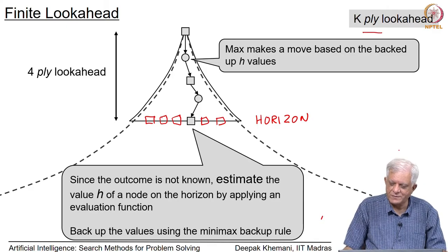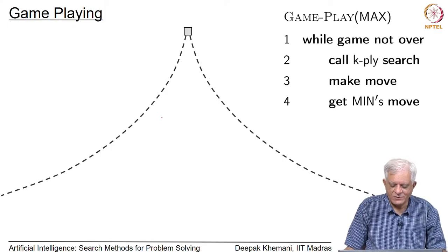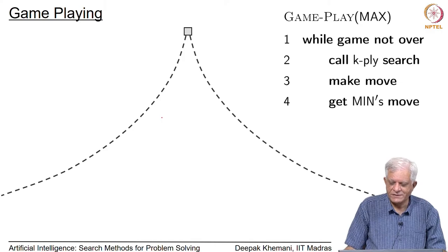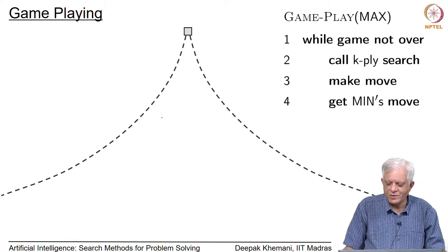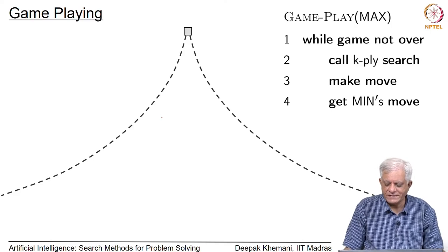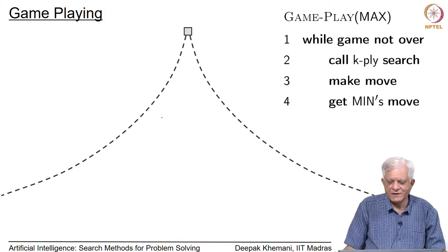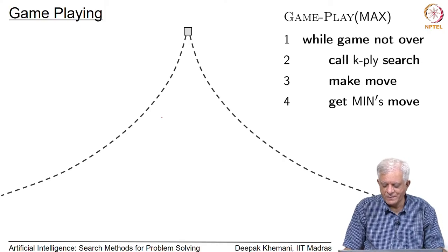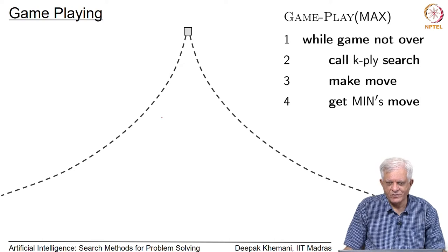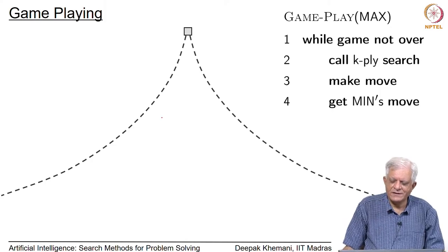The basic idea of game playing is not to analyze the whole tree in one shot, but to do this every time you want to make a move. The high-level algorithm for max is: while the game is not over, call the k-ply search algorithm, which looks ahead up to k plies, applies the evaluation function, backs up the values, and chooses the best move. Based on that, you make your move and then wait for min's move, and when min makes a move, you again call k-ply search.